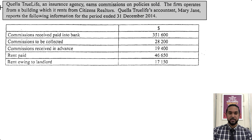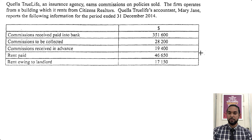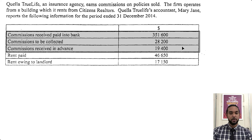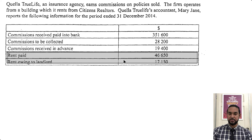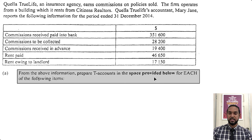So as per usual, we take a read of the question. It says Quella True Life, an insurance agency, earns commissions on policies sold. The firm operates from a building which it rents from Citizens' Realtors. Quella True Life's accountant, Mary Jane, reports the following information for the period ended 31st December 2014. Commissions received and paid into bank: $351,600. Commissions to be collected: $28,200. Commissions received in advance: $19,400. Rent paid: $46,650. Rent owing to landlords: $17,150.